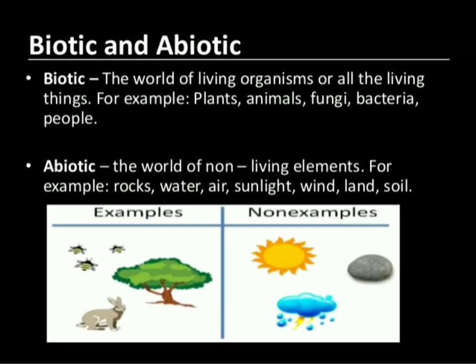Natural environment has two types of components: biotic and abiotic. Students, 'bio' means life. So biotic includes all the living things, for example: plants, animals, human beings, etc.